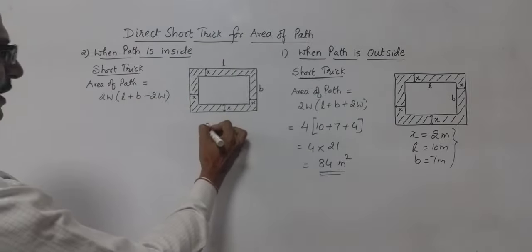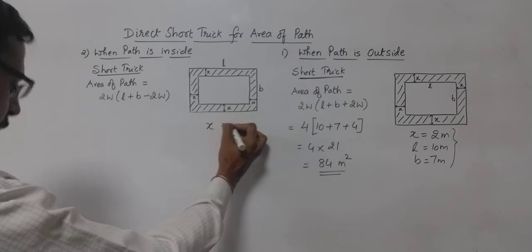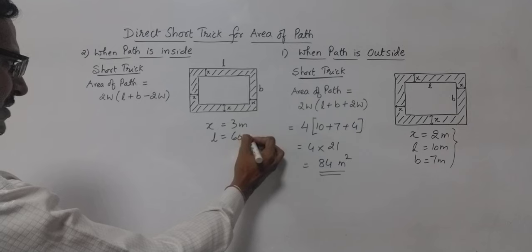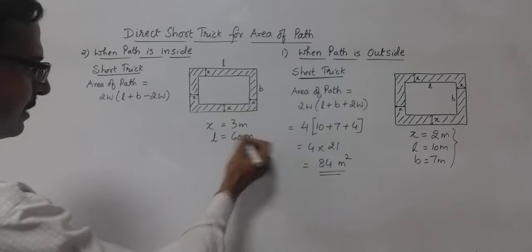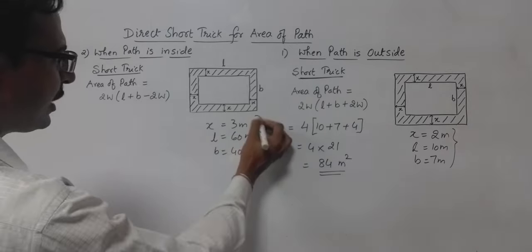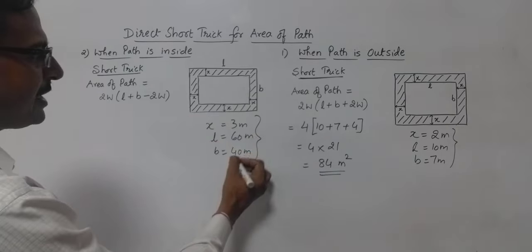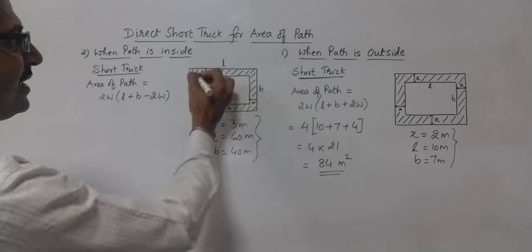So let us take a case when the width of the path given to you is 3 meters. The length, suppose anything, suppose 60 meters. So there is a big park 60 meters and the breadth is 40 meters.